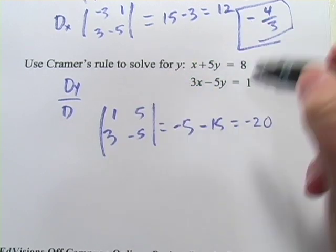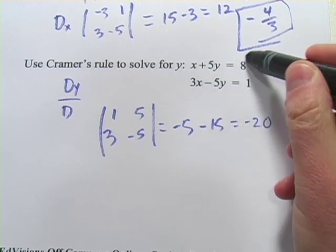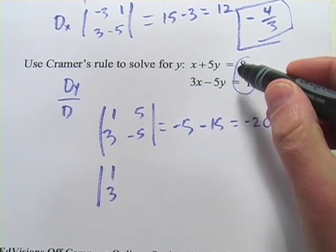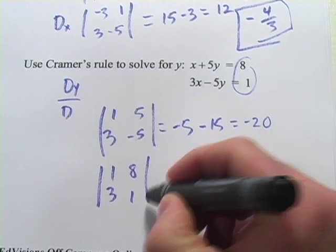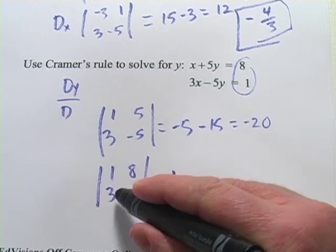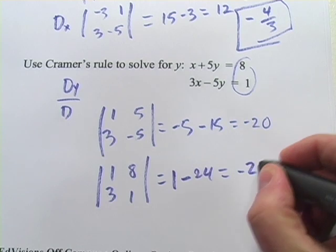And then our D_y is going to be the same coefficient matrix with these guys subbed in for the y's. So we're going to have 1, 3, still the same, but then 8 and 1. And that determinant is 1 minus 3 times 8 is 24. So that is negative 23.